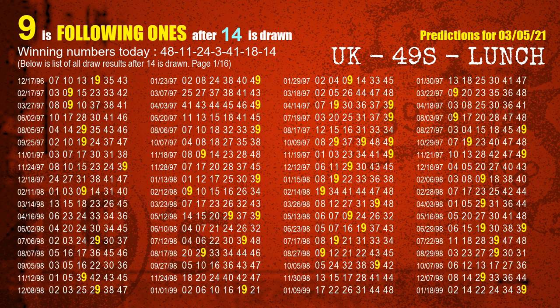After calculating following ones with today's result, we also find following ones through the results of the last draw. The booster winning number is 14. The most frequently following units digit is 9 when 14 is the winning number in the last draw.